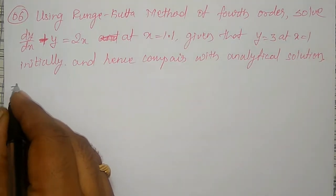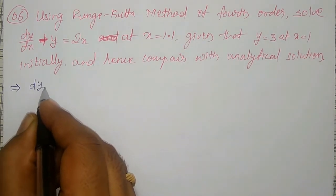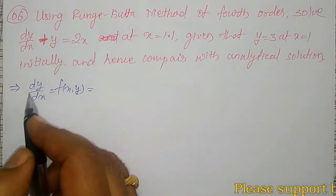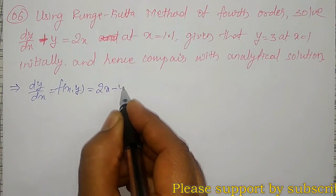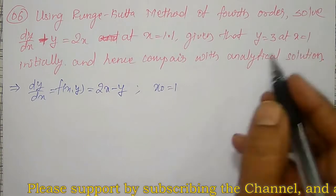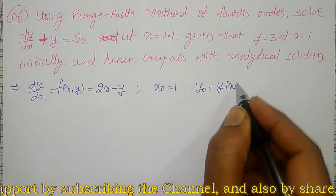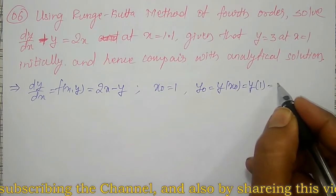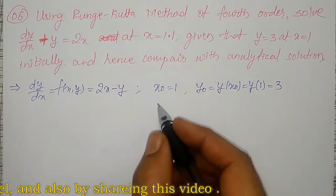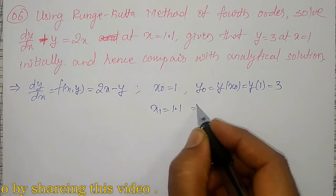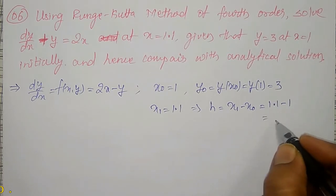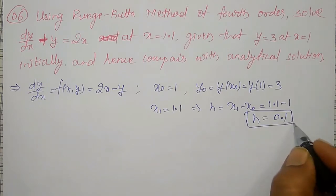Let me list out the given things first. dy/dx equals f(x,y). I have to shift y to the other side, so dy/dx equal to 2x minus y. Initial condition: x₀ equal to 1, y₀ equal to y(1) equal to 3. Step length is not directly mentioned, but x₁ is given as 1.1, which implies h equal to x₁ minus x₀, that is 1.1 minus 1, which equals 0.1. So h equal to 0.1.